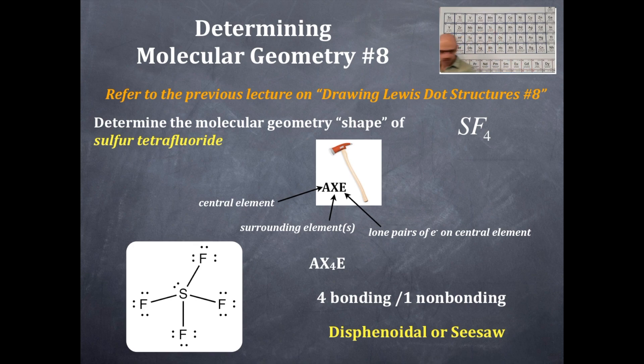And if we go back to the trigonal bipyramidal structure, you should see that this was the original structure here, which is 90 degrees and then 120, 120, 120. And what has happened is you've removed one of these and placed that with a lone pair of electrons